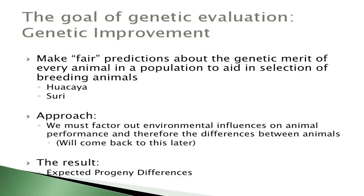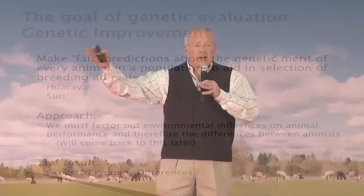EPDs work on averages. Our goal is to make fair predictions about every animal in the population — one of the tools in your toolbox to select the best animals for breeding. To do that, we've got to factor out environmental influences, because environment is not passed on. You buy an animal not for the way it was raised and how well it was fed, but for the genes it's going to pass on to your next generation. Once we weed out the environment, we've got EPDs.